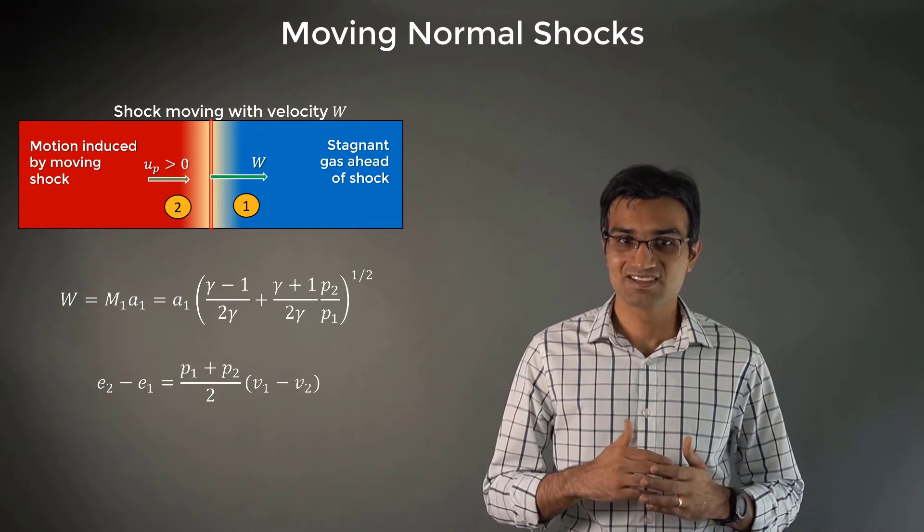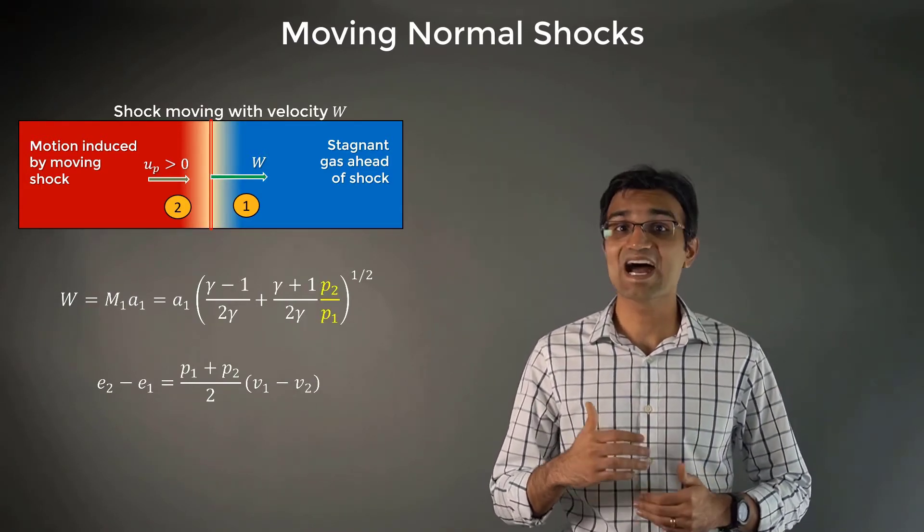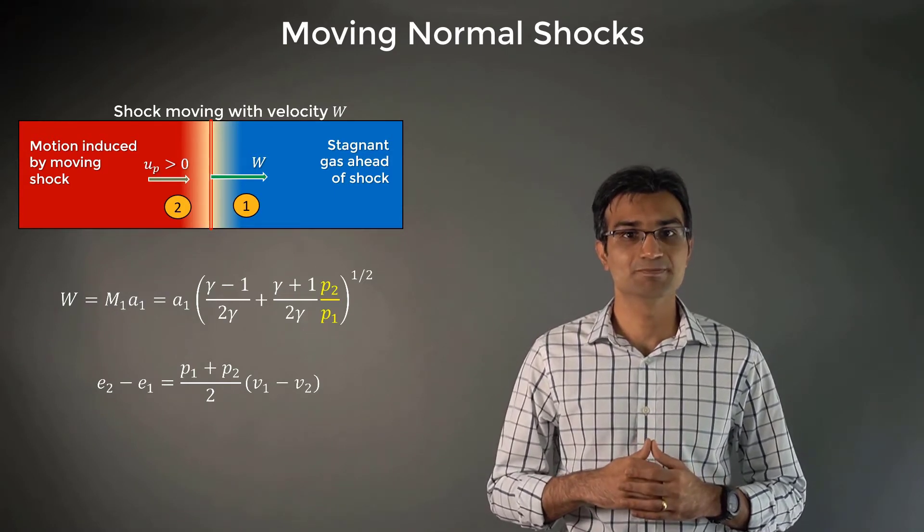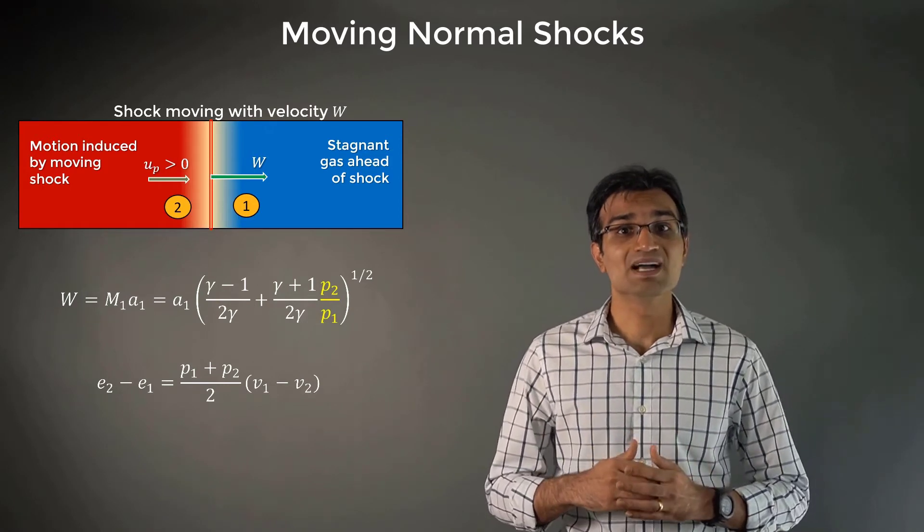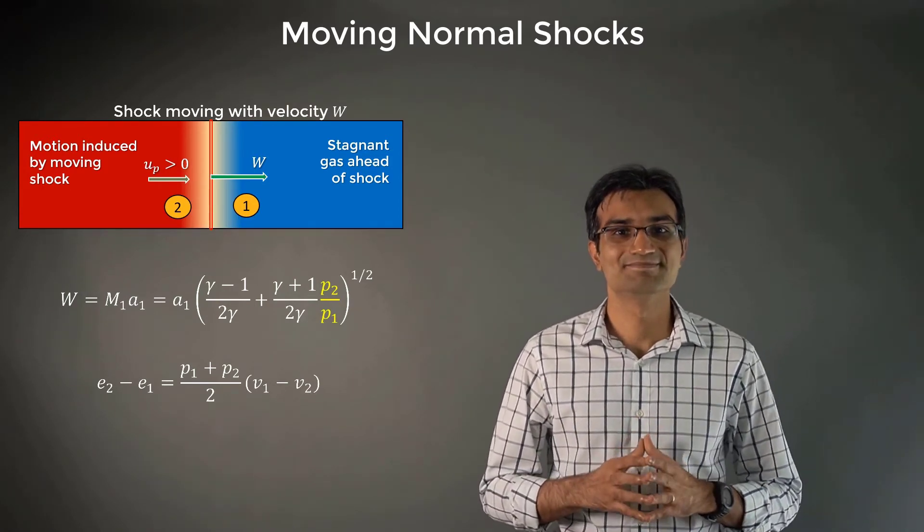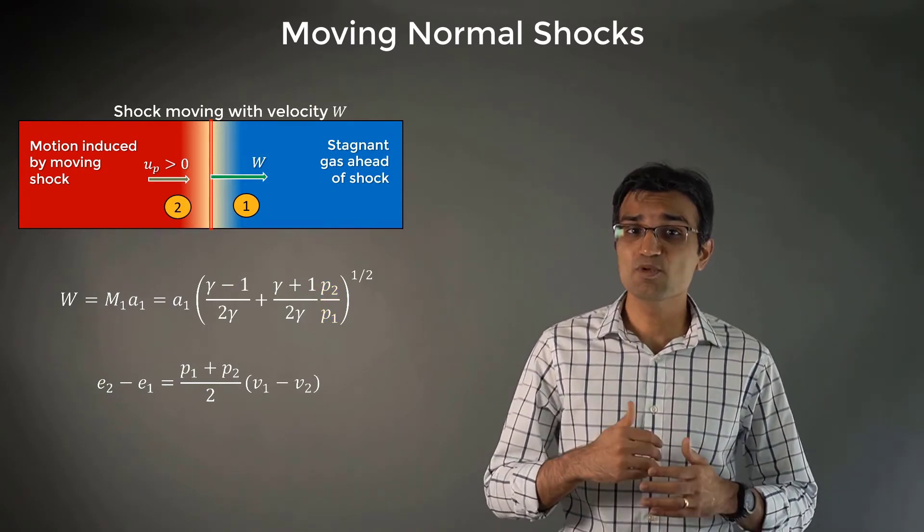For practical applications, the pressure ratio P2 by P1 is used as the basic independent parameter, which is different from steady shocks where we rely on Mach number as the governing parameter. For an ideal gas, we get these moving shock relations.